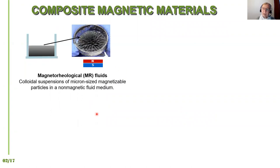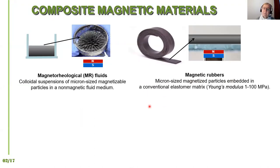Before I explain our composite material, I would like to remind you of two other composite materials you very probably already know. First, magnetorheological fluids — these are colloidal suspensions of micron-size magnetizable particles in a non-magnetic fluid, typically an oil. They form very nice flower-like structures when exposed to magnetic fields, which is why one can often see them in science centers or science festivals. Another type are magnetic rubbers, known from magnetic stickers and also present in the gaskets sealing the doors of our refrigerators. These are magnetized particles embedded in a typical elastomer matrix with a Young's modulus of several megapascals.